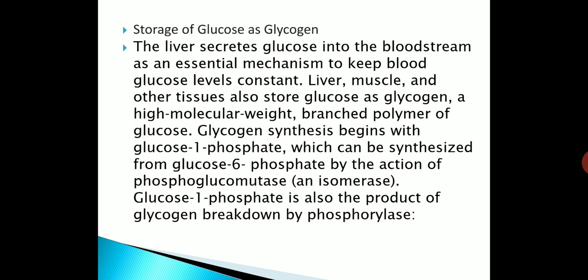The liver secretes glucose into the bloodstream as an essential mechanism to keep blood glucose levels constant. The liver, muscles, and other tissues also store glucose as glycogen, a high molecular weight branched polymer of glucose.